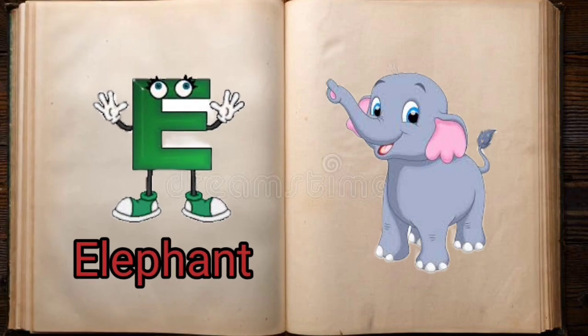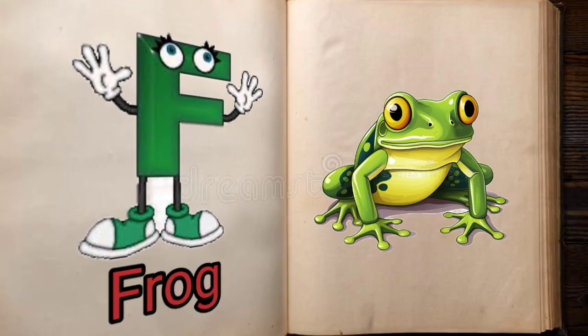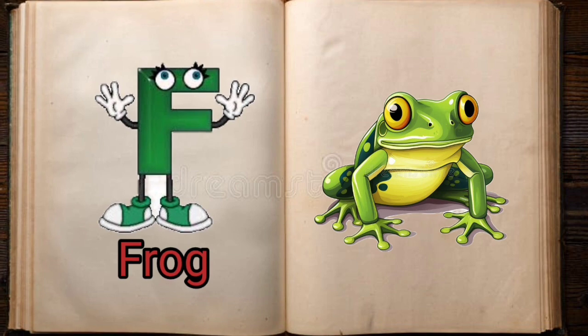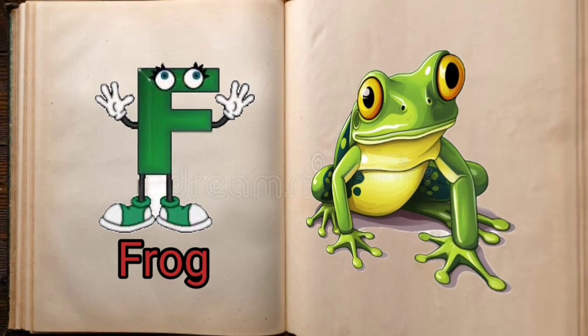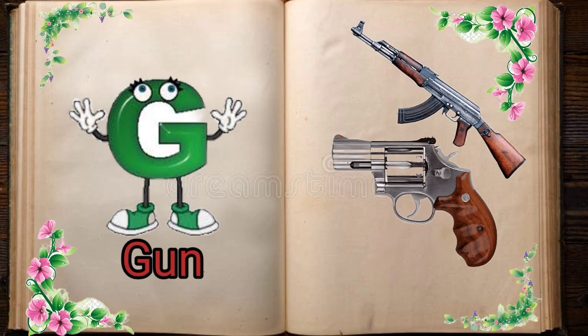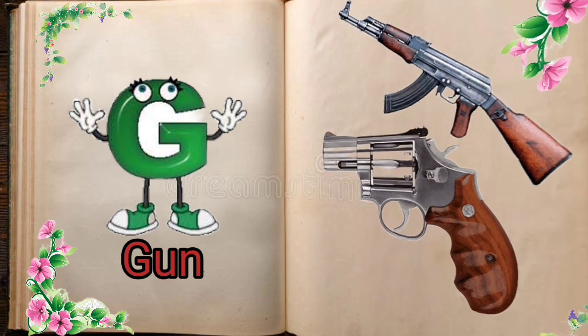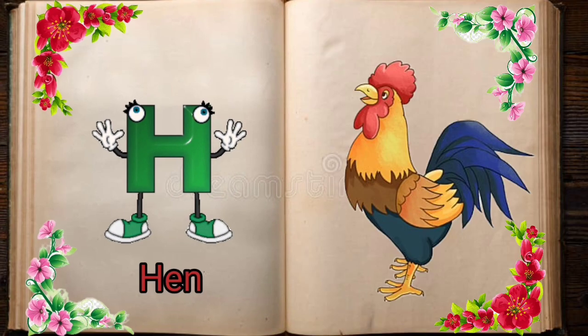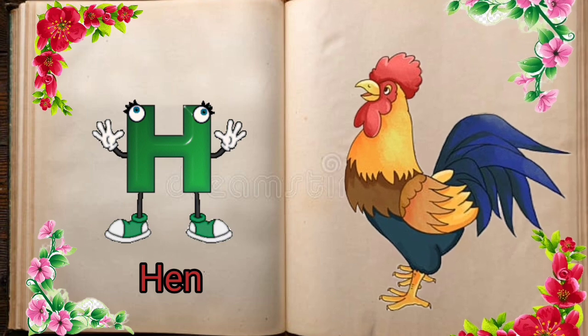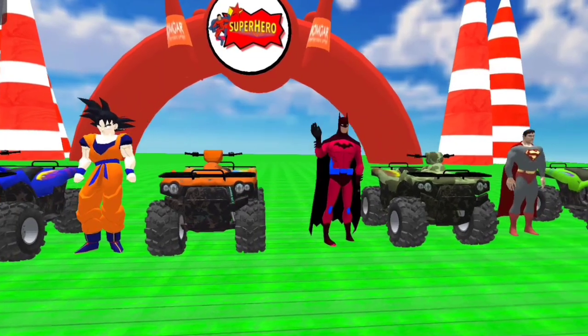E is for Elephant, E-E-Elephant. F is for Frog, F-F-Frog. G is for Goat, G-G-Goat. H is for Hand, H-H-H-Hand.